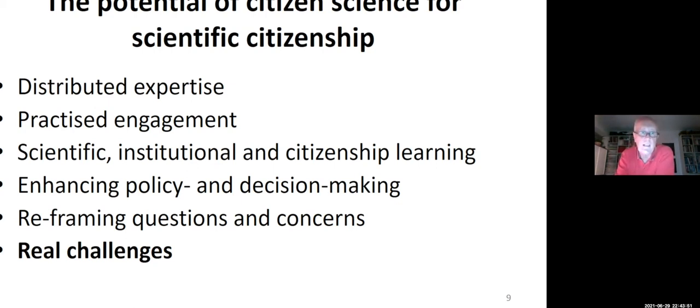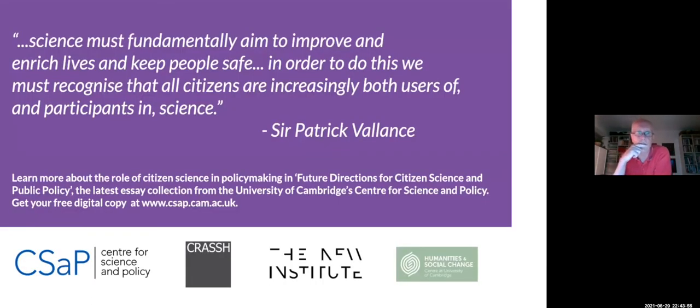I'm closing with a quote from Sir Patrick Vallance. Sir Patrick Vallance is the chief scientific advisor in the UK. He's been very central in the COVID crisis. And I wouldn't say he's any kind of radical on these issues. But I'm interested in the way that he phrases this: science must fundamentally aim to improve and enrich lives and keep people safe. In order to do this, we must recognize that all citizens are increasingly both users of and participants in science. So you see some kind of changing relationship. Of course, that raises issues, including those about data quality. But I think it is interesting to think in this way. And if you notice, there's a reference to an essay collection prepared by the Center for Science and Policy at Cambridge University. Thank you.